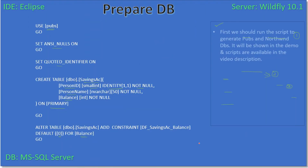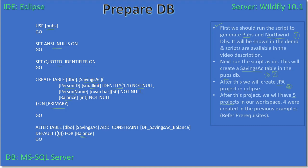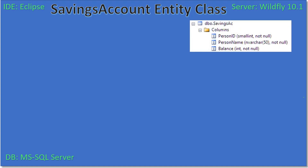In the last video we prepared our database, and in the 'pubs' database we added the savings account table. Now we will look at the SavingsAccount entity class we will create in the demo. We know that the database table savings_account contains three columns: person_id, person_name, and balance. The person_id is an auto-generated field and it acts as the key column.